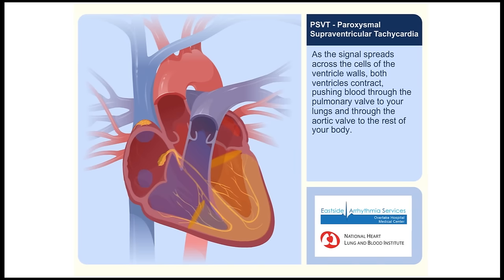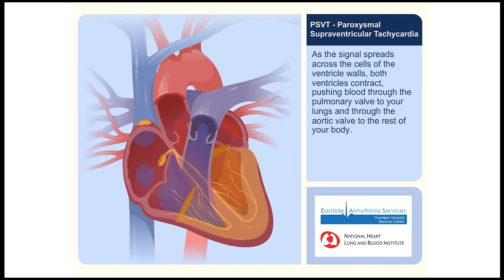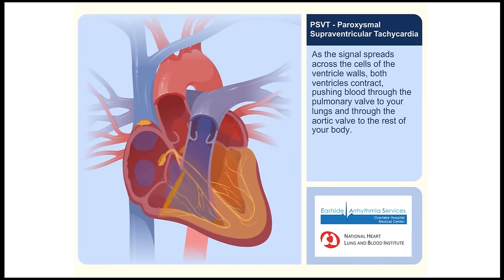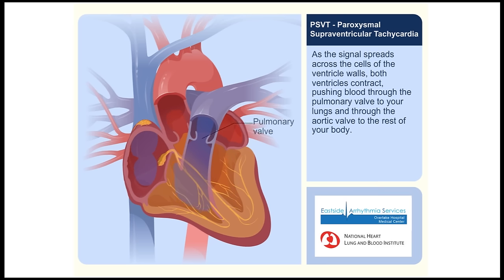As the signal spreads across the cells of the ventricle walls, both ventricles contract, pushing blood through the pulmonary valve to your lungs and through the aortic valve to the rest of your body.